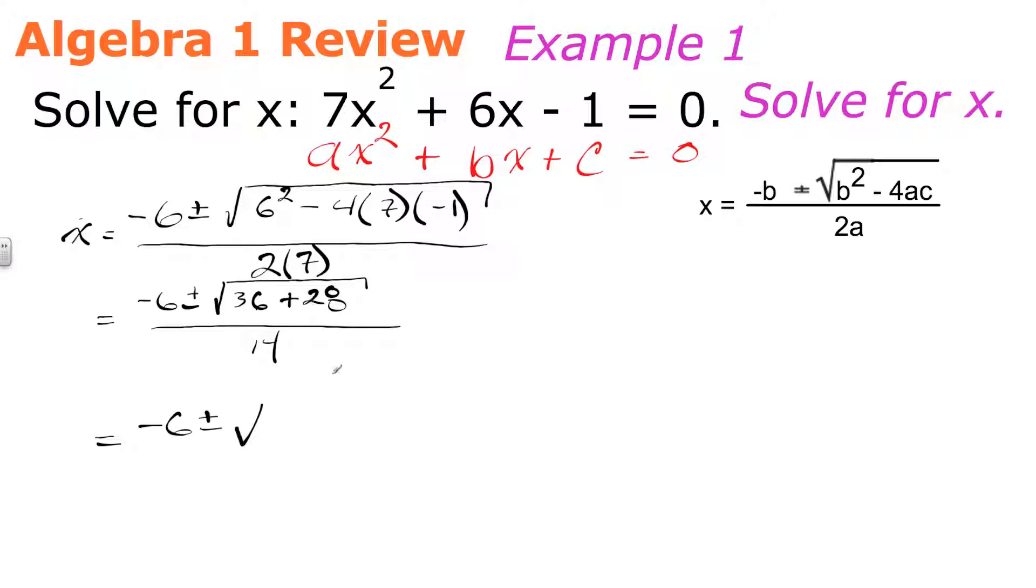Let me give myself a little bit more room here. Again, I'm just copying this down to keep track of my work. Now, under here, 36 + 28. Well, 8 + 6 is 14, 2 and 1 is 3, plus the 3 in the other tens place is 64. And that's all over 14.